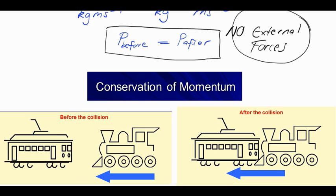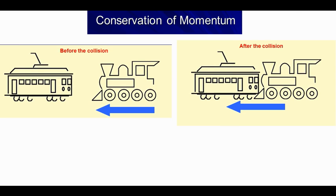Okay, so a typical problem. Alright, we've got two diagrams here. One shows what's going on before the collision. We've got a locomotive and a carriage. The carriage is stationary. It has got a velocity equal to zero.